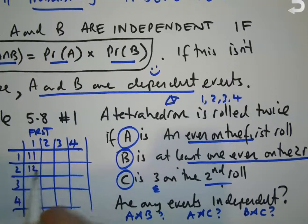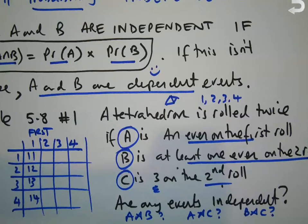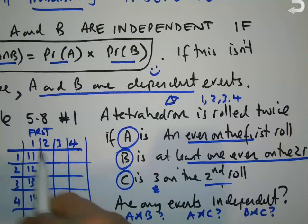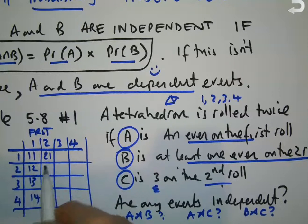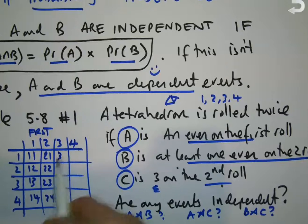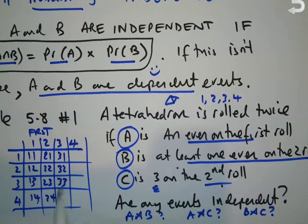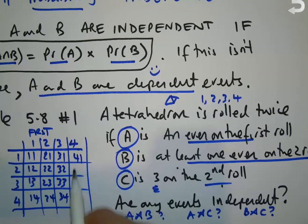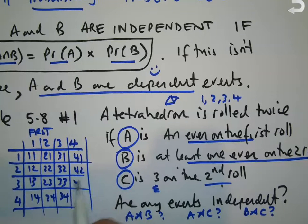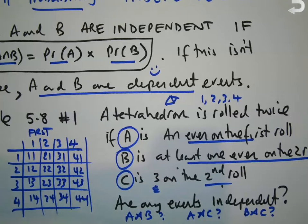On the first roll I can have a one, two, three, or four. On the second roll I can have a one, two, three, or four. This gives a nice lattice grid of all 16 outcomes: (1,1), (1,2), (1,3), (1,4); (2,1), (2,2), (2,3), (2,4); (3,1), (3,2), (3,3), (3,4); (4,1), (4,2), (4,3), (4,4). Here are my 16 outcomes, all equally likely because each face of the tetrahedron is equally likely to roll.